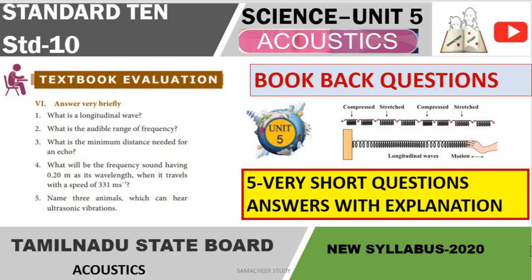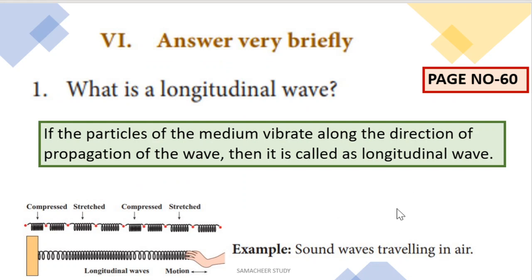5 very short questions for answers. First question: what is a longitudinal wave? Waves are of two types: longitudinal and transversal. A longitudinal wave is defined as one where particles of the medium vibrate along the direction of propagation of the wave — that is, the direction in which the wave travels.